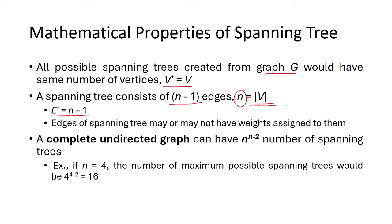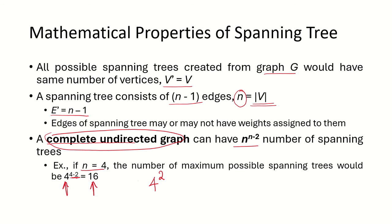The edges of the spanning tree may or may not have weights assigned to them. If the graph is a complete undirected graph, then it can have a maximum of n to the power of n minus 2 spanning trees. For example, if the number of vertices is 4, the maximum possible spanning trees would be 4 to the power of 4 minus 2, which is 4 squared, equaling 16.